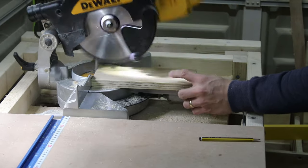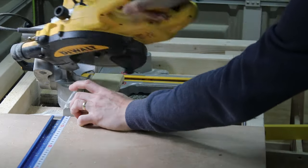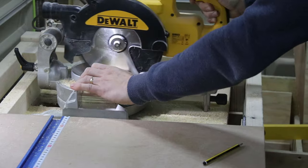Using my miter saw I cut two pieces of plywood, one of them at a 45 degree angle on both ends.